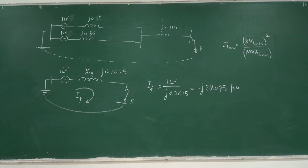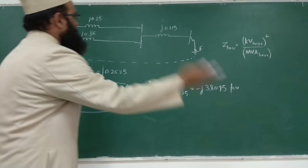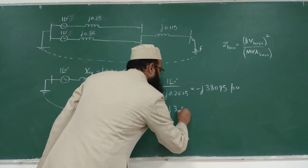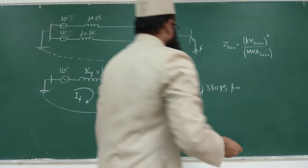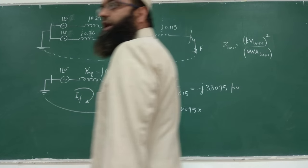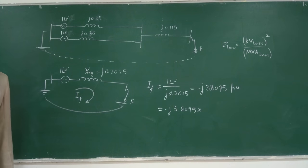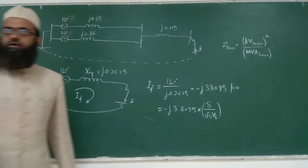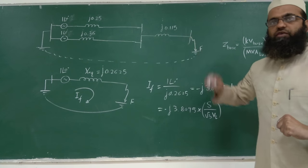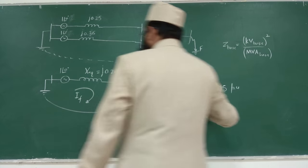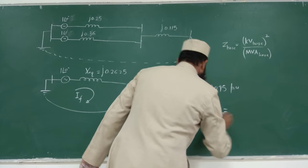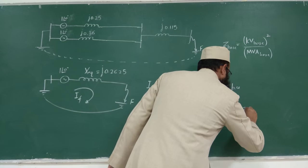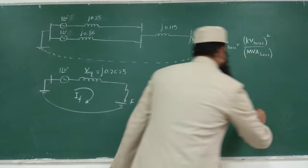To get the actual fault current: the fault has occurred on the high voltage side of the transformer, so use the 132 KV base. I_base = S / (√3 × V_L) = 100 MVA / (√3 × 132 KV) ≈ 437.4 A. Therefore, IF_actual = 3.095 × 437.4 ≈ 1353 A (magnitude), with angle −90 degrees.